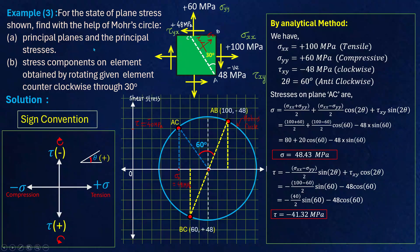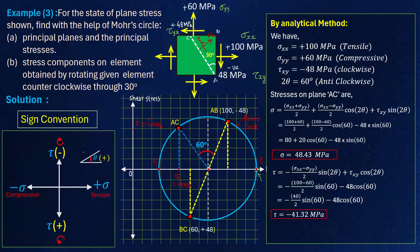Now for part 1 — principal planes and principal stresses. The principal plane is a plane which has no shear stress. On the Mohr circle, there are two points where shear stress is zero: these two points represent the two principal planes. The point with the larger normal stress value is the major principal plane, and the other is the minor principal plane.